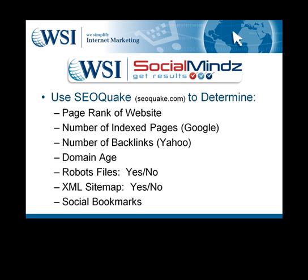SEOquake will provide you a lot of information, but we just want to take a look at the main things that we feel are important when it comes to SEO rankings. The first point we've highlighted is page rank — this is a scale from 0 to 10 which Google provides, with 0 being the worst and 10 being the best, and it's really determined by the quantity and quality of links pointing back to your website. Number of indexed pages is important because the more pages you have, the more credit the search engines give you. Google's magical mark is around 100 pages, and once your site hits 100 pages you're considered a resource, which is a lot of value from a search engine perspective.